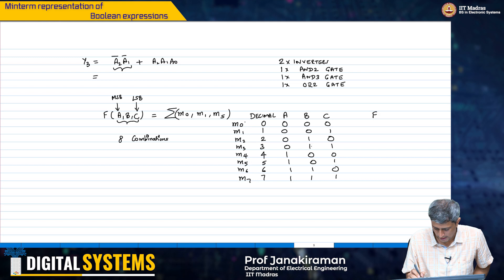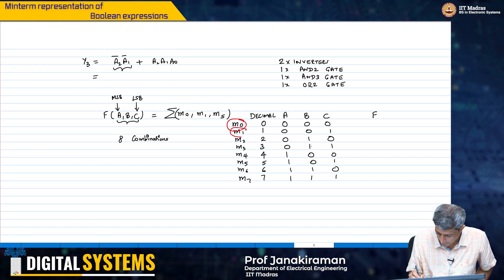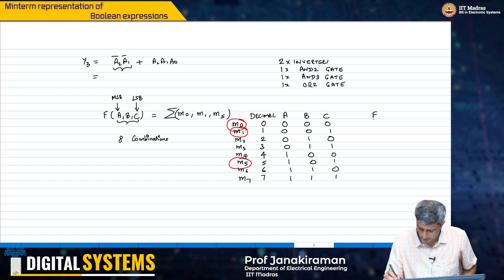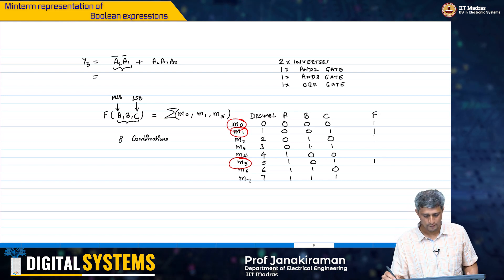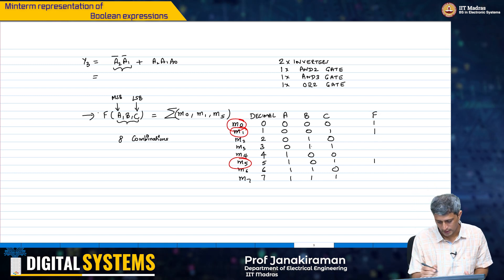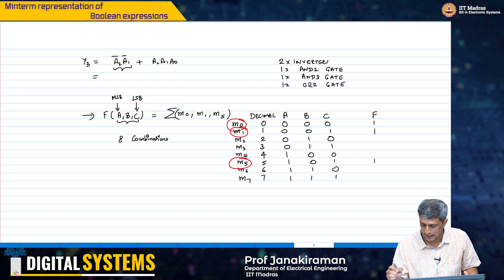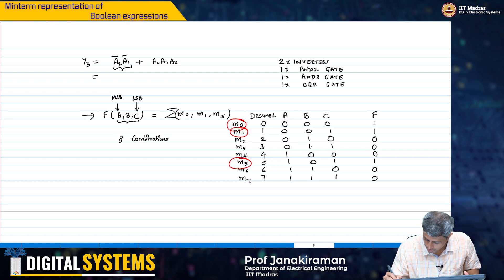Now, therefore, what do I have? The function f basically is m0, m1 and m5. This is what it is. So, I come here and populate 1, 1 and 1 here. So, if I were to take this representation in terms of m0, m1, m5 and just fill out the truth table, this is exactly what I would do. Fill in zeros everywhere else.